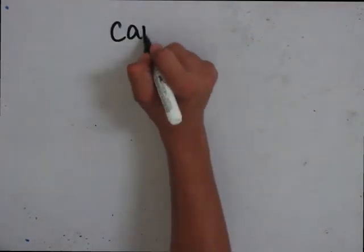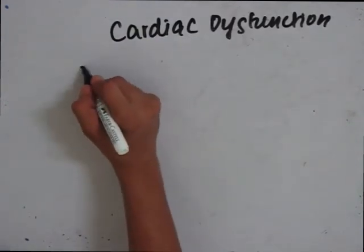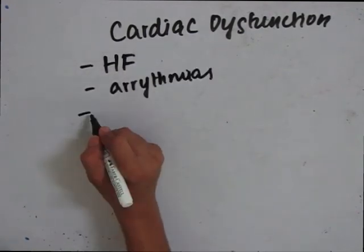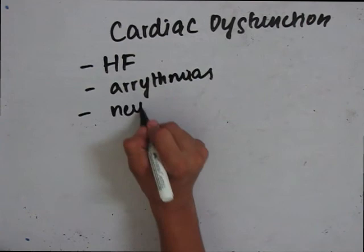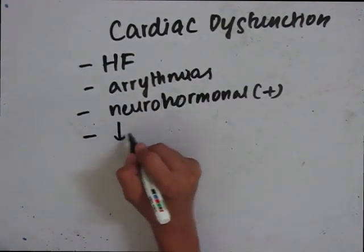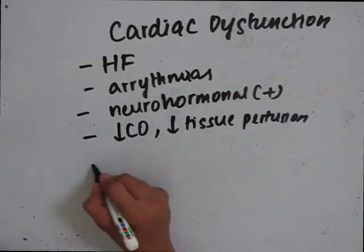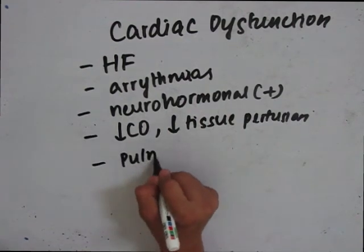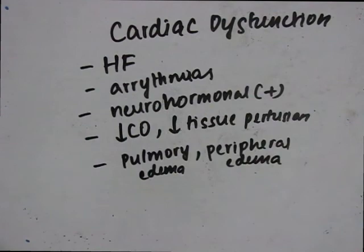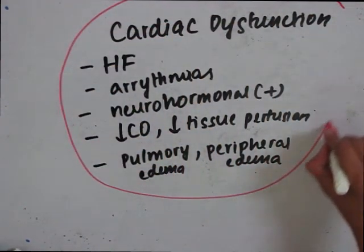Cardiac dysfunction can lead to heart failure, arrhythmias, neuro-hormonal stimulation, or decrease in cardiac output and decrease in tissue perfusion. It can also lead to pulmonary edema or peripheral edema. These are the final complications of cardiac hypertrophy.